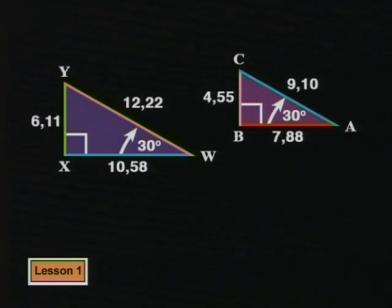Look at these two triangles, triangle ABC and triangle WXY. They are both right-angled and they both have an angle of 30 degrees.